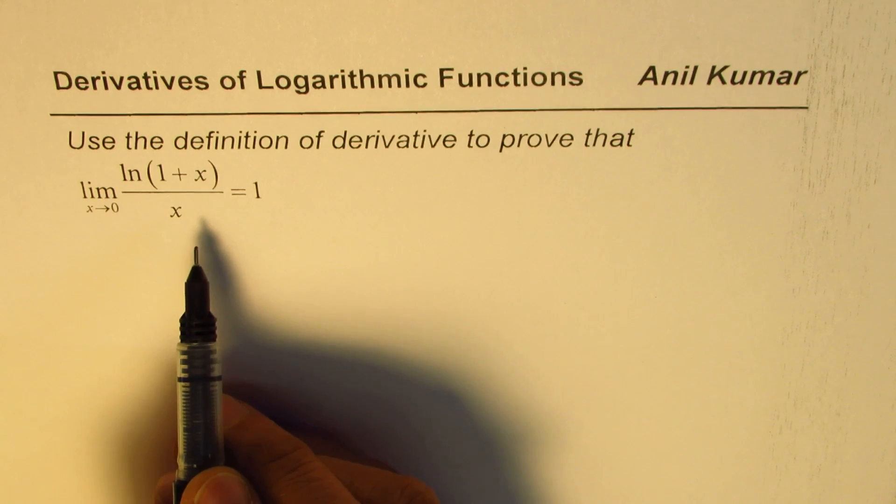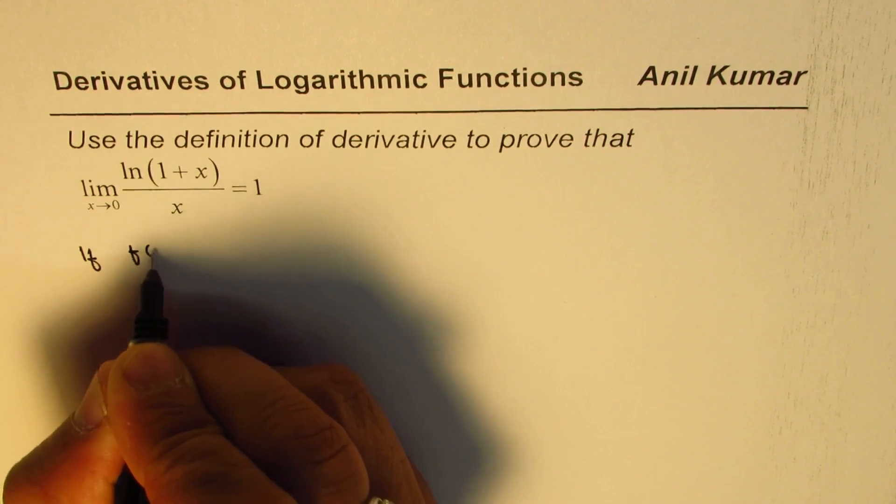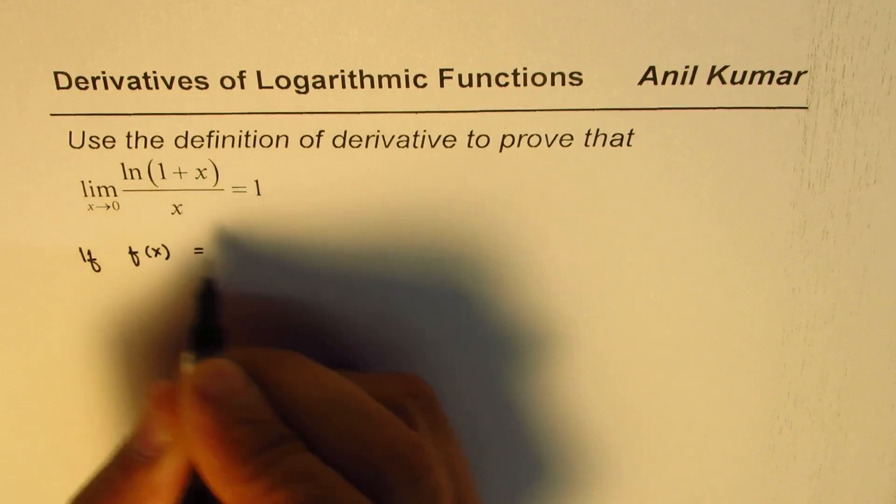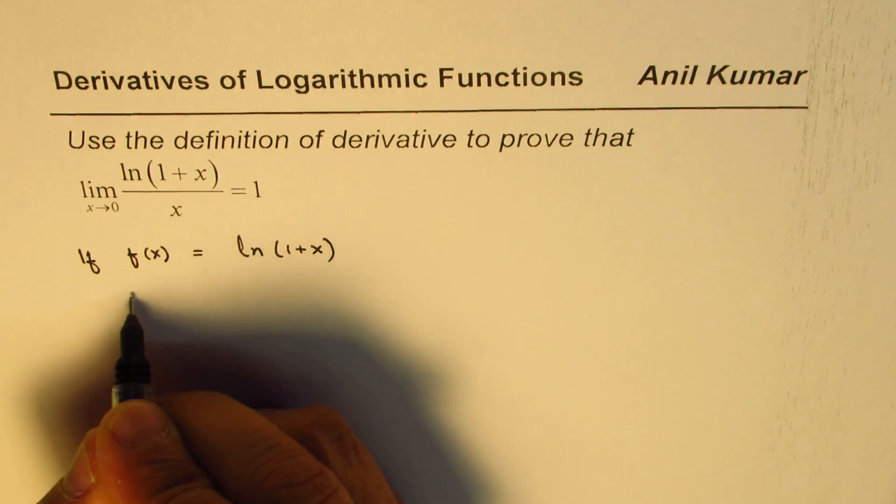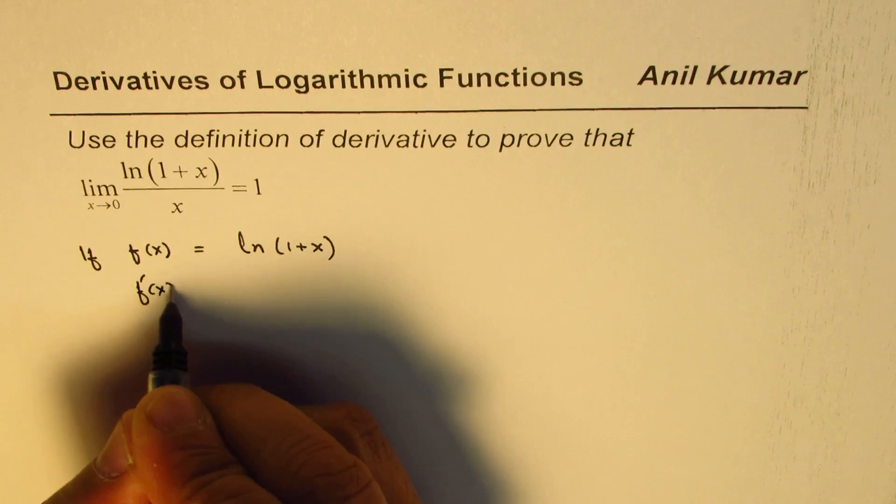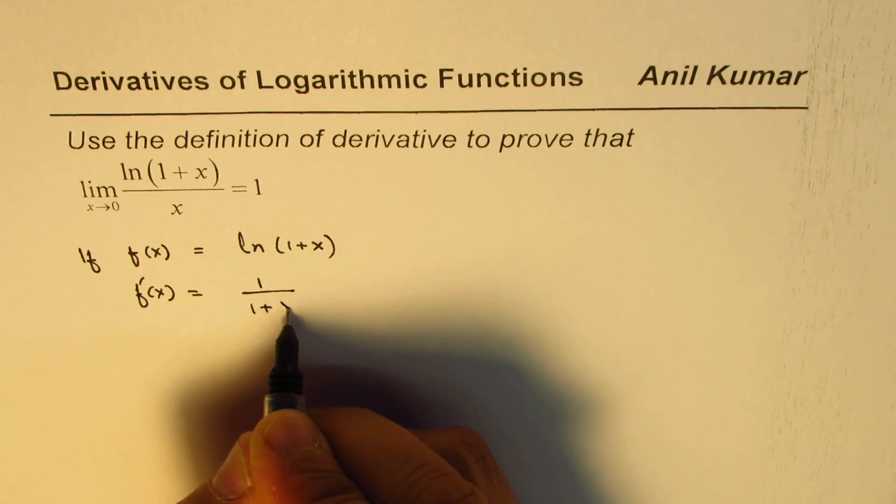Now, for solving such a question, let us consider that if the function f(x) equals this function, which is ln(1+x), then what is the derivative of this function? The derivative of this function will be 1 over (1+x).